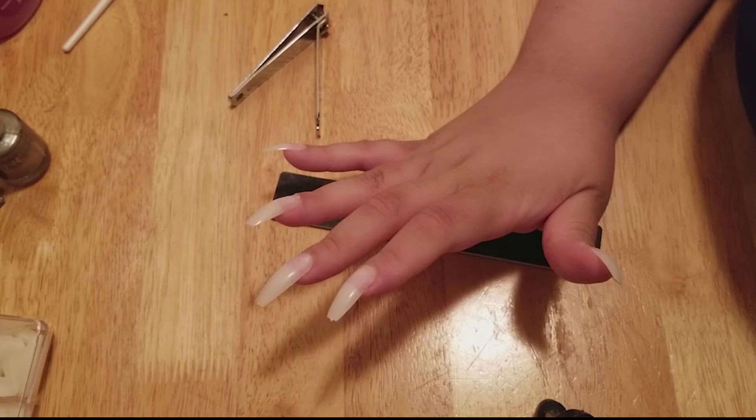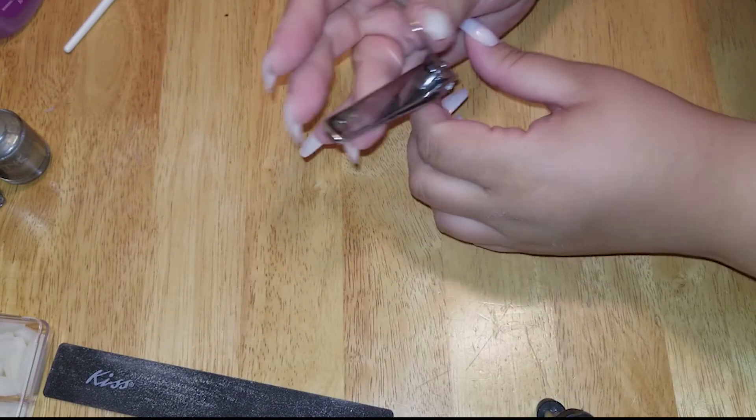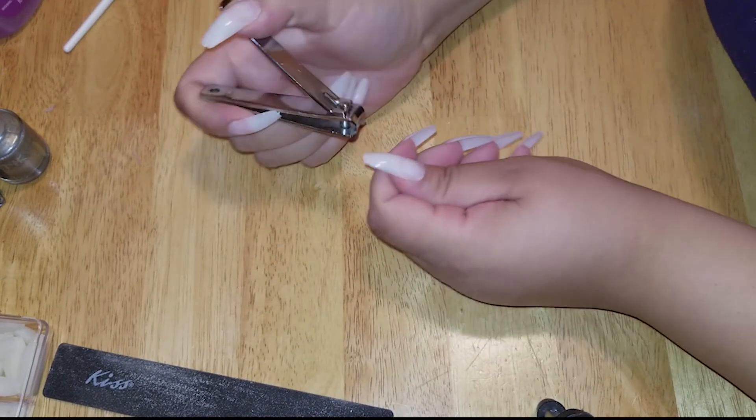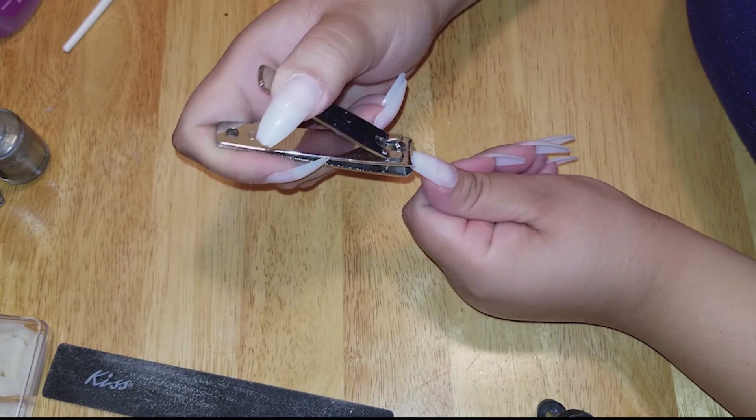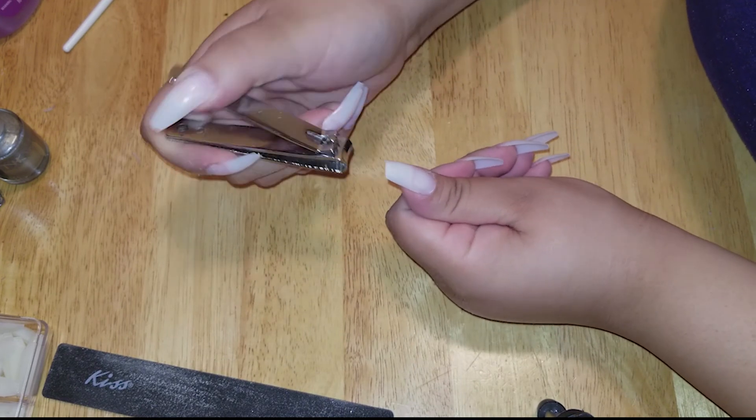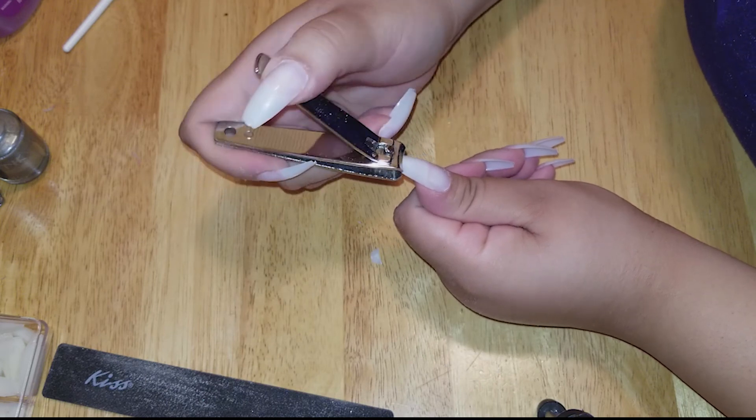So now that you have all your nails on, it's time to shape them into the shape that you want. These nails come super long and they were too long for me, so I cut them and I'm going to file them into coffin shapes. But if you guys want them long like that, just paint your nails and you're done.